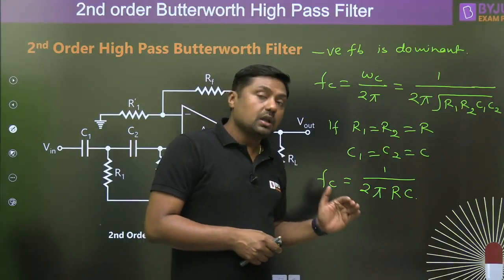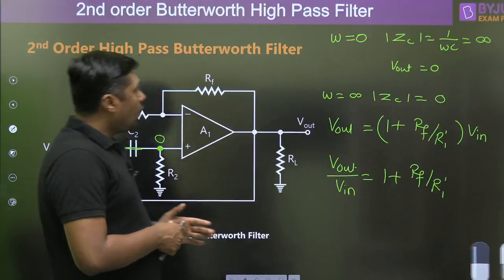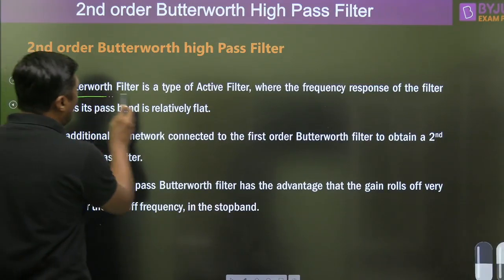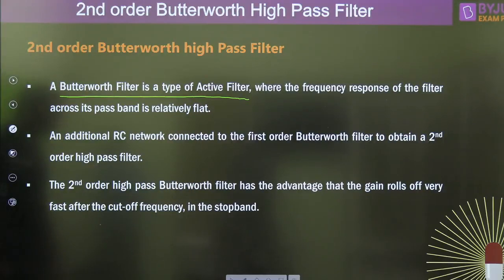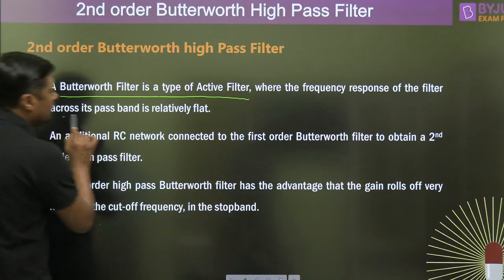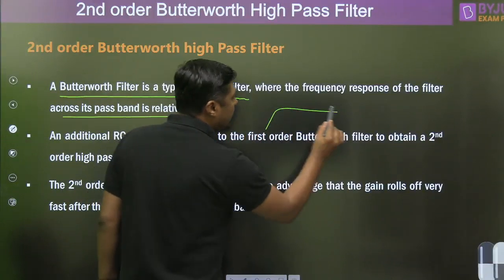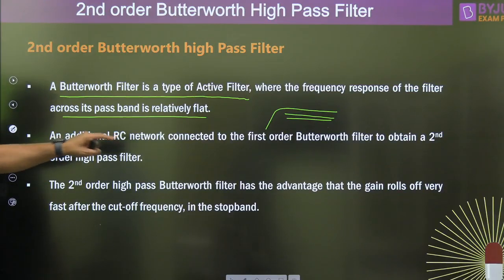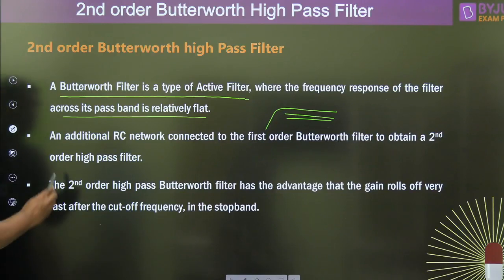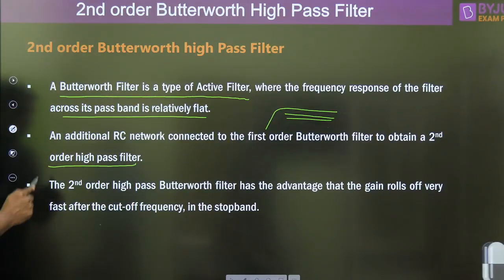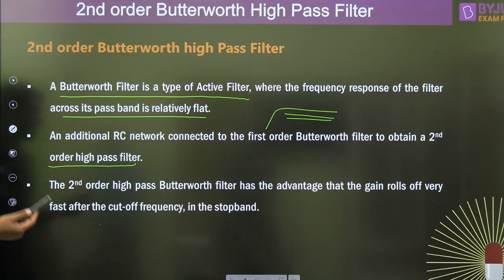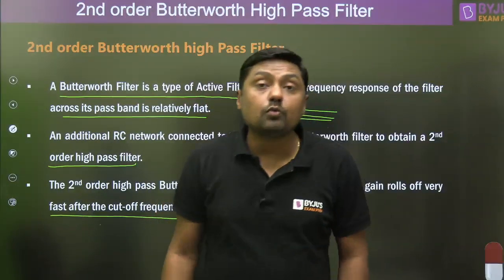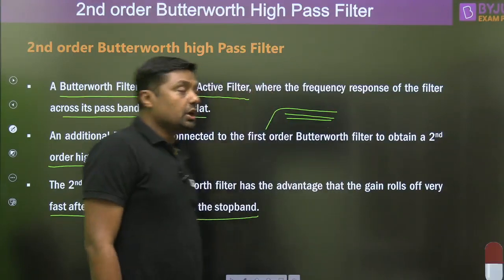A Butterworth filter is a type of active filter where the frequency response across its pass band is relatively flat — very little variation with respect to changes in frequency. An additional RC network connected to the first order Butterworth filter gives the second order high pass Butterworth filter. This has the advantage that the gain rolls off very fast after the cutoff frequency in the stop band, at a slope of 40 dB per decade — near ideal condition.